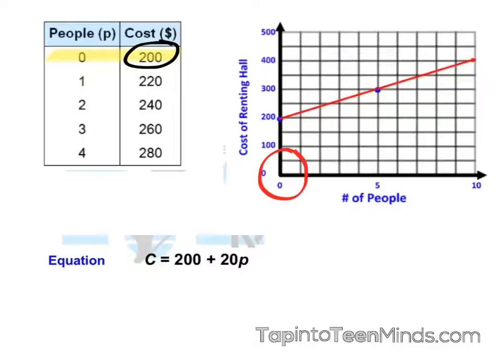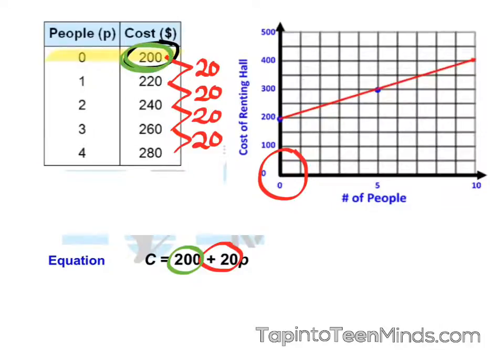The equation for this particular relationship is C equals 200 plus 20P. And you might recognize, in our table, our Y values go up by 20, which gives us the constant of variation. And you'll note that the 200 can be found with our X value at 0. This is something that we will look at later in the unit. So this is not a direct variation.